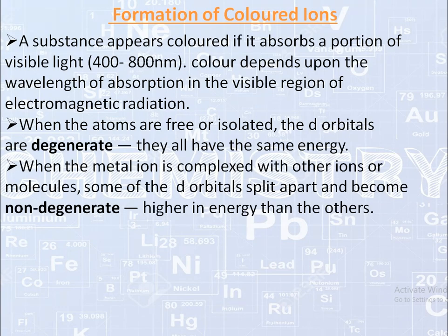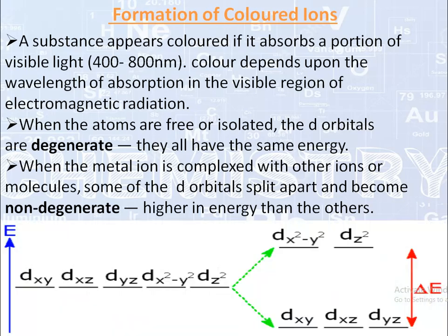When the metal ion is complexed with other ions or molecules, some of the d-orbitals split apart and become non-degenerate — meaning some are higher in energy than others, they have different energy levels. As seen in this diagram, the d-orbital has five sub-shells which split into two groups. One group consists of three orbitals: d-xy, d-xz, and d-yz, which are at a lower energy level. The second group consists of d-x²-y² and d-z², which are at a slightly higher energy level.